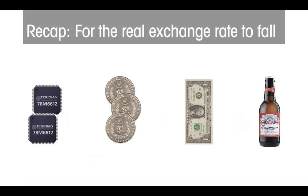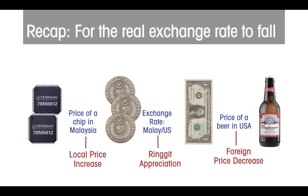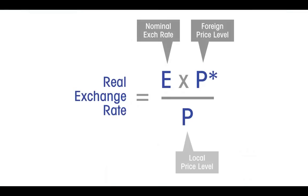Summarizing these effects, a real appreciation — a fall in the exchange rate — could come from any of: a decrease in the US price level, a nominal appreciation of the ringgit, or a rise in local prices, other things remaining unchanged. These influences on the real exchange rate can be captured more clearly by using a formula. The real exchange rate is the product of the nominal rate and the foreign price level, divided by the local price level.